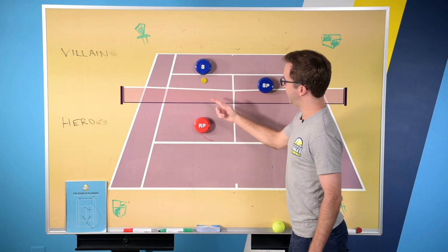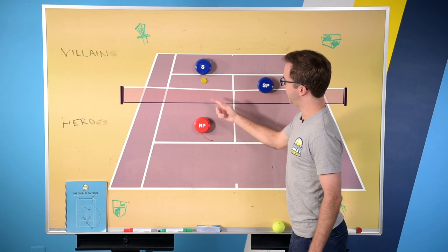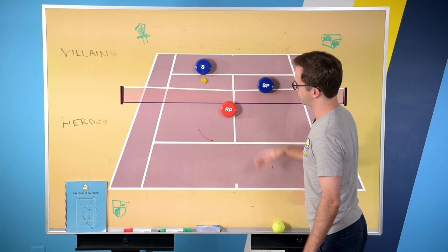then as soon as they're about to hit, I would just move into the middle of court, and this ball is almost certainly going to come back cross court, and you volley and put it away.